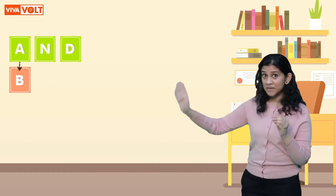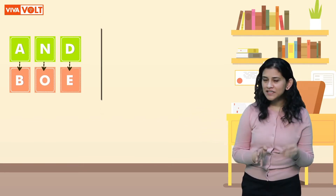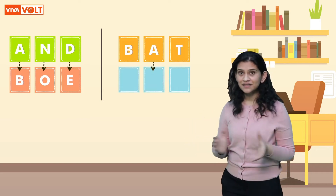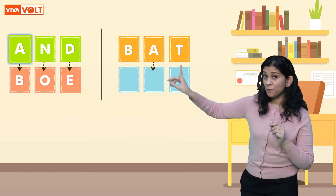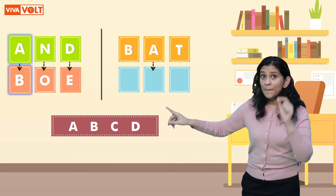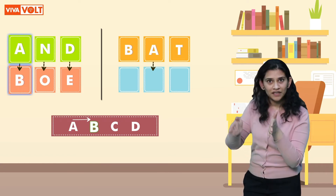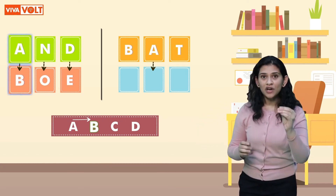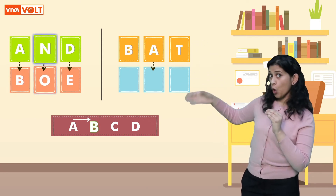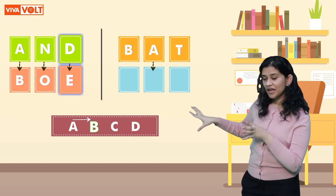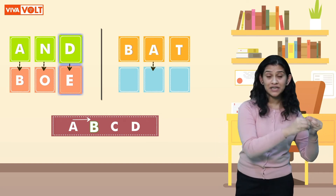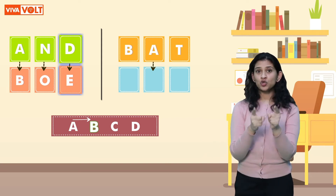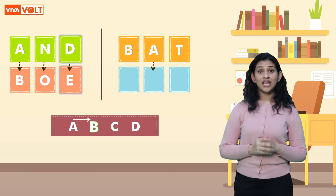If AND is being written as BOE, how will you write BAD? Here you will need to understand the pattern that is being followed. A is being denoted by B — B is succeeded by A in alphabetical order: A, B, C, D. Similarly, N is being followed by O, and D is being followed by E. Using this logical pattern where the original letter is replaced by its successor, it should be easier for you to understand how BAT will be written.